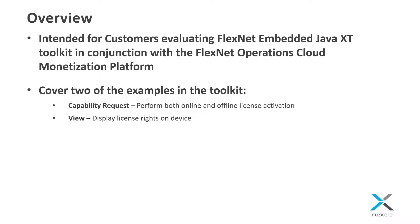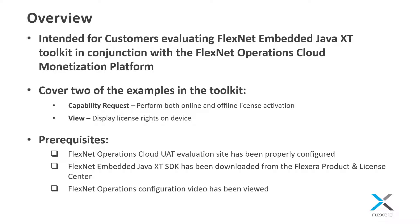I will be covering two of the examples in the toolkit. The first is the capability request example, which can be used for both online and offline license activation. The second is the view example, which displays the license rights on the device. For prerequisites, it is assumed that you have been provided with system administrator access to a FlexNet Operations cloud evaluation site that has been properly configured for licensing, and that you have already downloaded the appropriate FlexNet Embedded Java XT toolkit for your development environment from the Flexera product and license center. It is also highly recommended to watch the FlexNet Operations configuration video for use with the FlexNet Embedded XT kit examples. If you have any questions, please contact your Flexera representative.